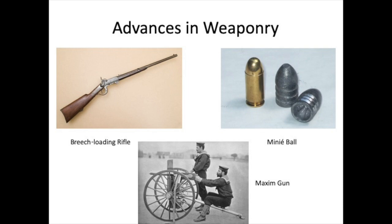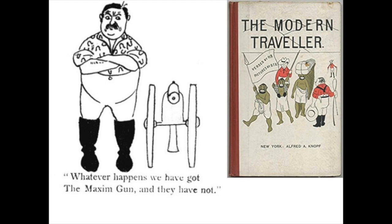Finally, the Maxim gun, an early machine gun, gave Europeans an overwhelming advantage over Africans and Asians. This included adventurous travelers and businessmen, as well as armies. Popular and prolific writer Hilaire Belloc expressed this in The Modern Traveler, where one fictional character tells another: 'Whatever happens, we have got the Maxim gun and they have not.'